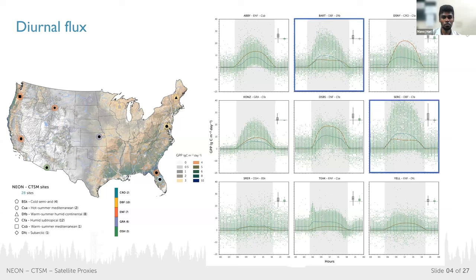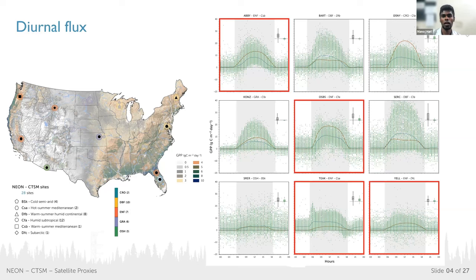Looking at the highlighted box, these two sites represent deciduous broadleaf vegetation. Despite having different climatic backgrounds, the CTSM simulations at both deciduous broadleaf sites are underrepresented compared to NEON observations. On the other hand, for the evergreen needle forest sites highlighted in red, each has a different climatic background and different diurnal flux variations. This shows that both PFTs and climate have distinct influential roles in modulating flux across different sites.